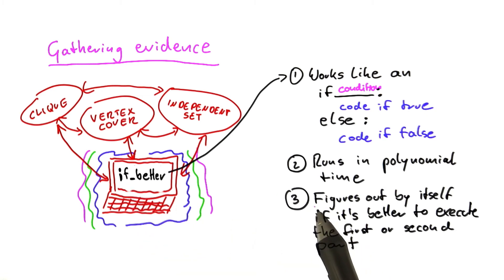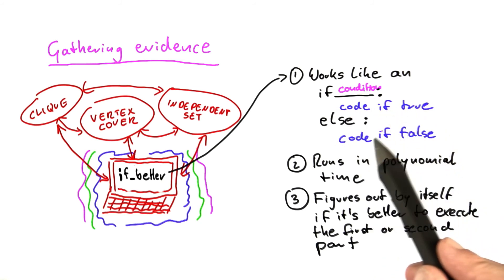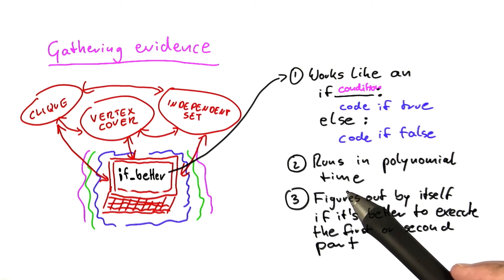Now the if better is a function that will figure out by itself if it's better for us - and I'm going to show you in a minute what I mean by that - if it's better for us to execute this part up here or this part down here. It will always, if you will, guess correctly which part of the code to execute.